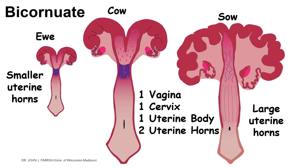For the ewe, cow, doe, and sow, the uterus is considered bicornuate, meaning it has two uterine horns, one uterine body, and one cervix. For the sow, the uterine horn is larger because the sow is a polytocous animal. In the cow, ewe, and doe, external fusion makes the body appear moderately large, with moderately developed uterine horns due to an intermediate degree of fusion.